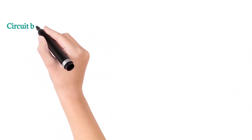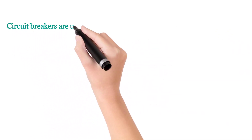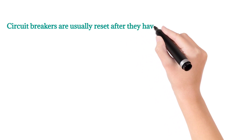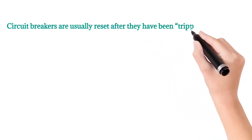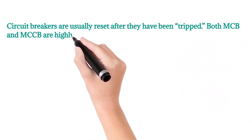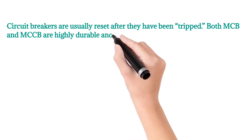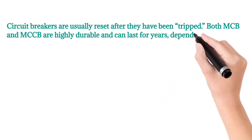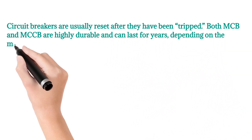Circuit breakers are usually reset after they have been tripped. Both MCB and MCCB are highly durable and can last for years, depending on the manufacturer.